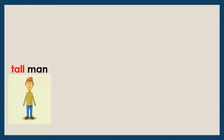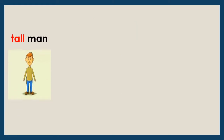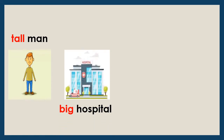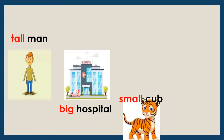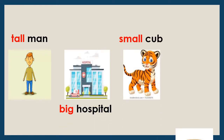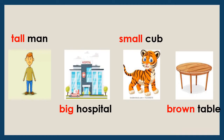For example: tall man, big hospital, small cub and brown table. So words tall, big, small and brown — they describe them. So they are called describing words.